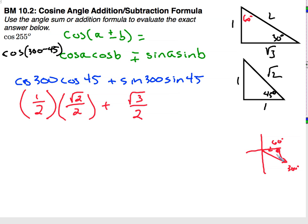And sin is negative in quadrant 4, so I am actually going to want negative square root of 3 over 2. And sin of 45 is square root of 2 over 2.